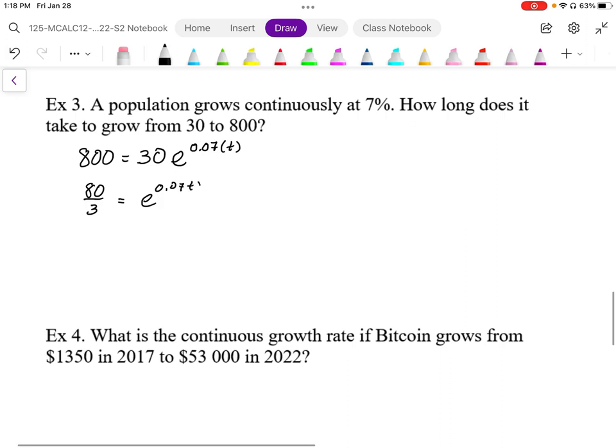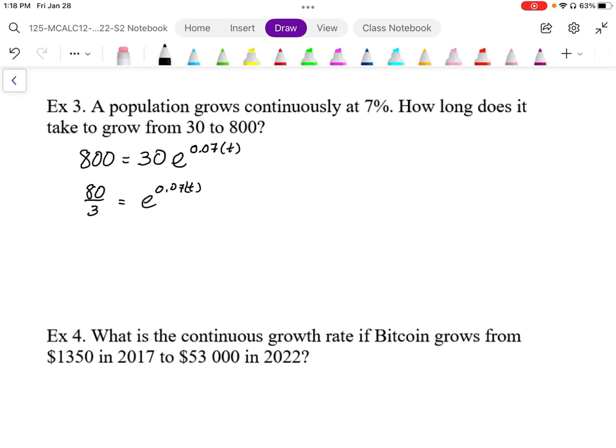I now have an exponential expression, where I have a base, an argument, and an exponent. So then I put this into the log form. Log base E of the argument, which is the answer to the exponential expression, is equal to the exponent, 0.07 times t.